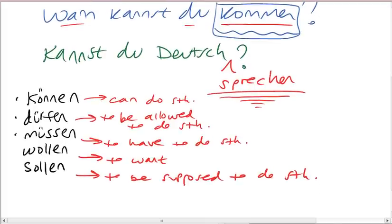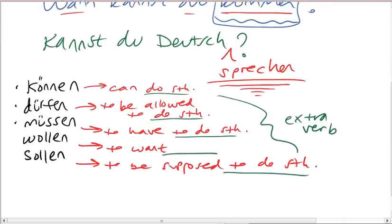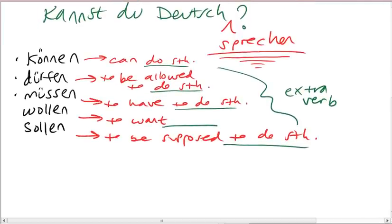Sollen is to be supposed to do something. So you can see that this do something, allowed to do something, have to do something, want something or do something, supposed to do something, this is where we're talking about the extra verb. That you will almost without fail always see with a modal verb, because otherwise they wouldn't be special.